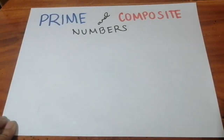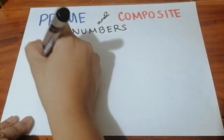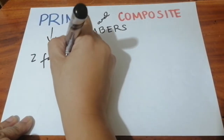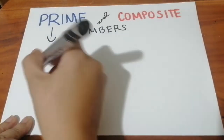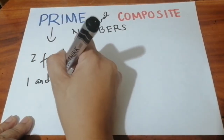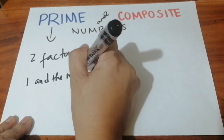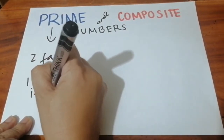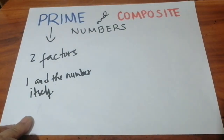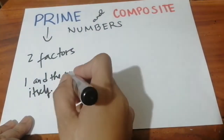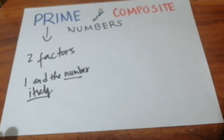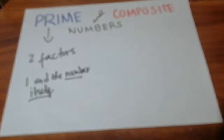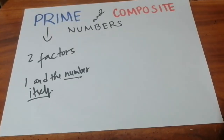So, prime numbers have only two factors, and the factors of a prime number are one and the number itself. This means that when we say two factors — one and the number itself — the only factors are one times the number. An example of that is two.